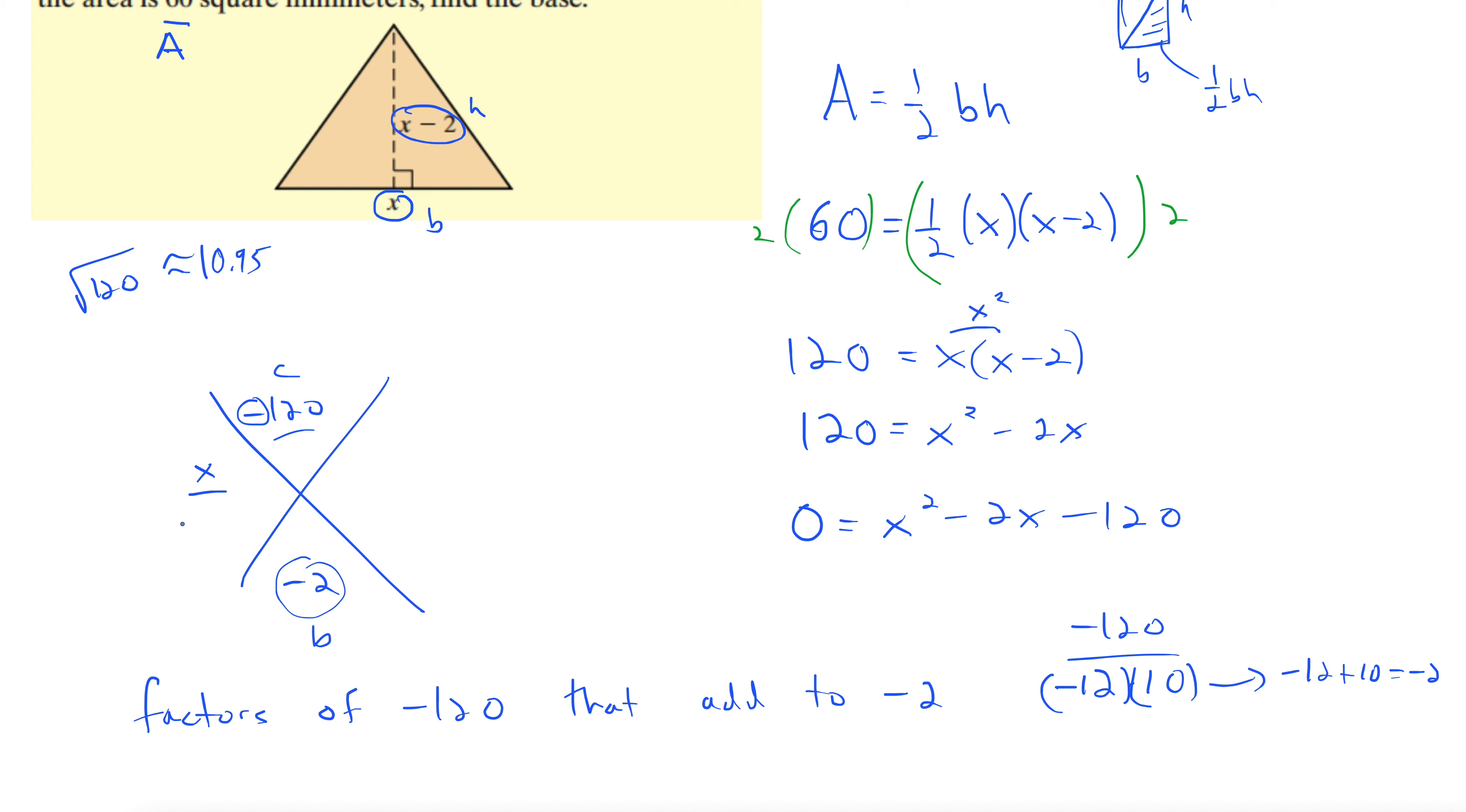So I'm going to put these in here, negative 12, 10. Okay, and that gives us our factors. So our factors here are x minus 12, x plus 10 equals 0. So x must be 12, and x must be negative 10. There I'm setting each one of these equal to 0 and solving.